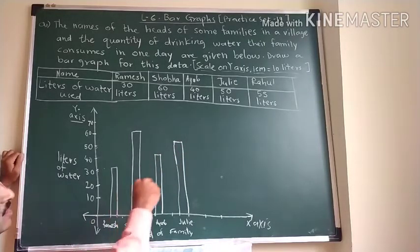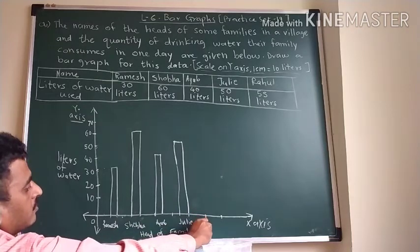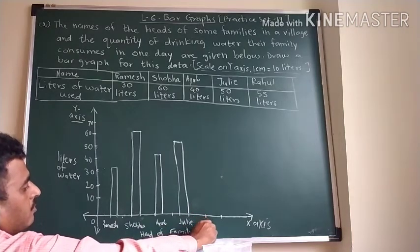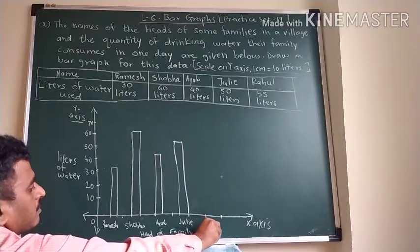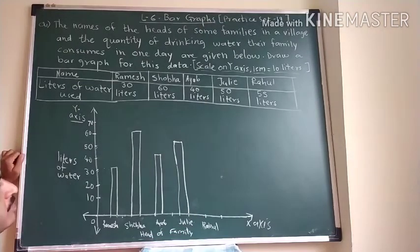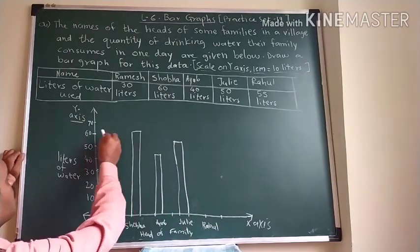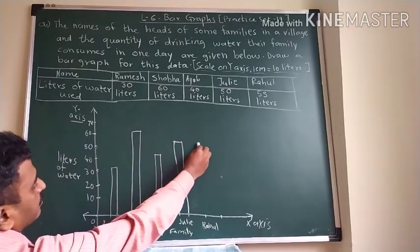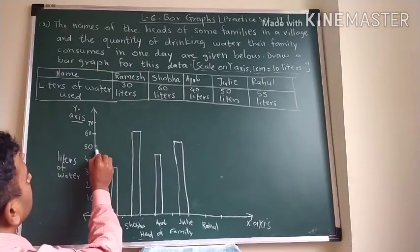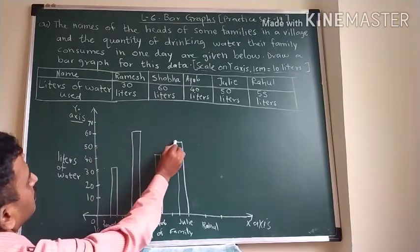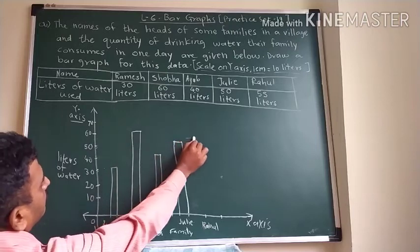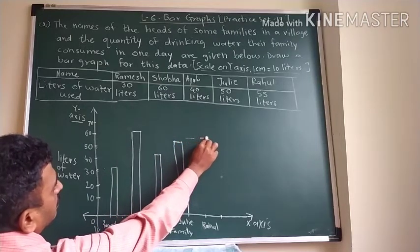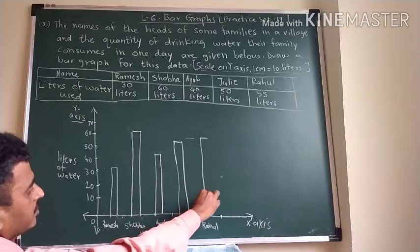Now last one is Rahul. We have to write Rahul here. Rahul's family using 55 liters. Now you can see the 55. Directly 50 and 55. Here is the 55.